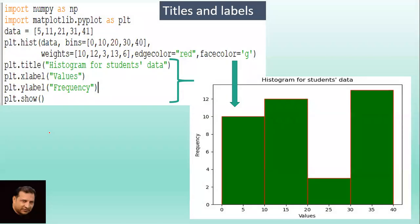Next example. Import numpy as np, import matplotlib.pyplot as plt. Data: 5, 11, 21, 31, 41 - just random data. Then plt.hist(data) - this is your first argument based on which your histogram will be created. And we have taken bins here: 0, 10, 20, 30, 40. Weights: 10, 12, 3, 13, 6.